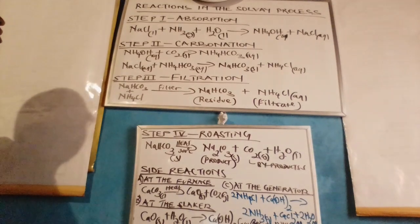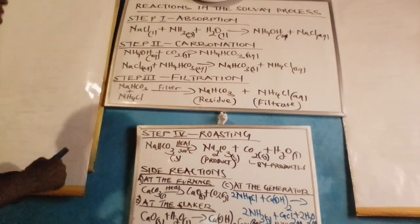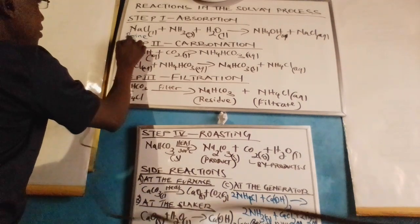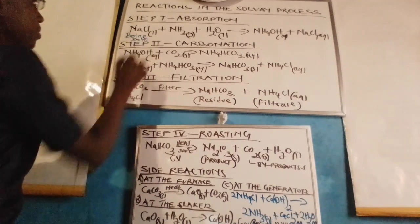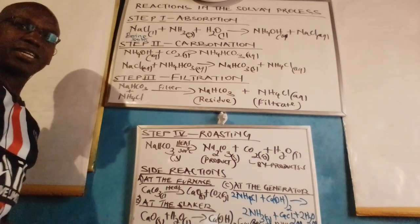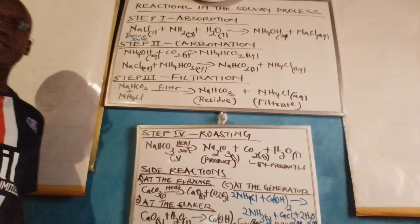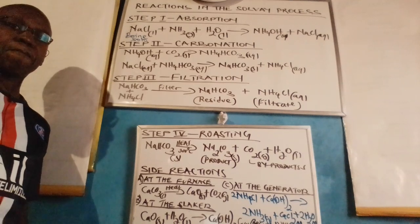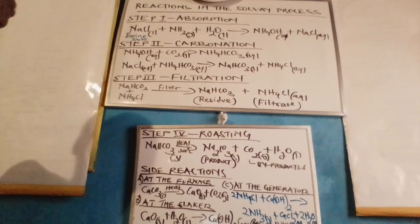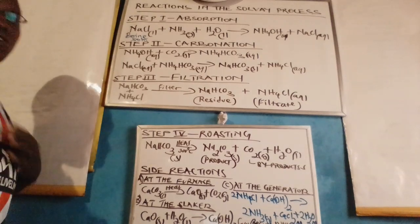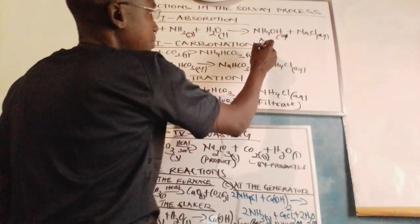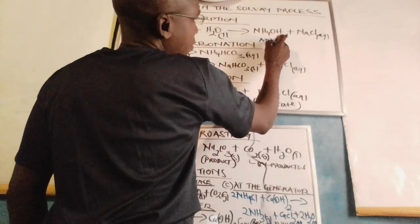To begin with, in the Solvay process, we introduce brine solution, which is sodium chloride. When brine solution is introduced in the absorption chamber, it meets ammonia gas in the presence of water, which is taken down from the roofs of the absorption chamber. The water has a purpose of dissolving the reaction mixture, and when the process occurs, ammoniated brine is formed. Ammoniated brine is a mixture of ammonium hydroxide and sodium chloride, as shown here.